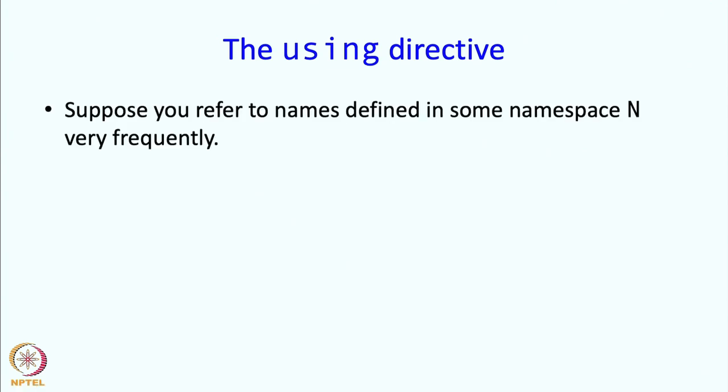Now there is something called the using directive which comes in handy often. So if you have defined a namespace N and you have many names defined in it and you want to access them quite frequently, you may get tired of writing N colon colon all the time.